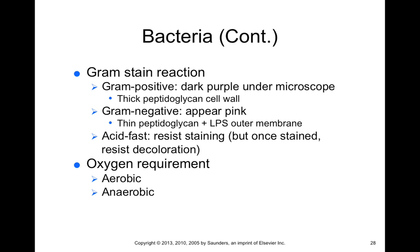Bacteria also have different types of cell walls or membranes. We talk about gram-positive versus gram-negative bacteria. Gram-positive bacteria have a thick peptidoglycan cell wall and stain dark purple using a gram stain under the microscope. Gram-negative bacteria appear pinkish because they don't stain as well; they have a thinner peptidoglycan layer and a lipopolysaccharide outer membrane. There are also acid-fast bacteria, which resist staining but once stained resist decoloration.